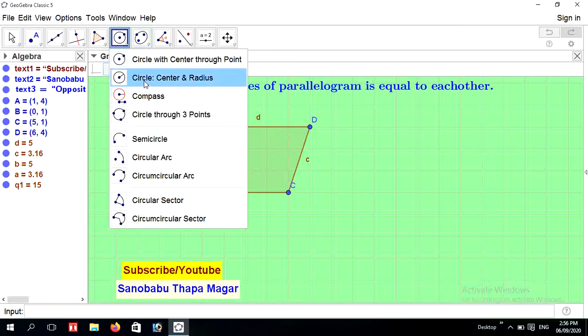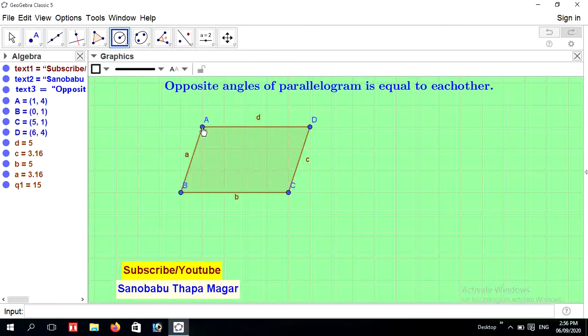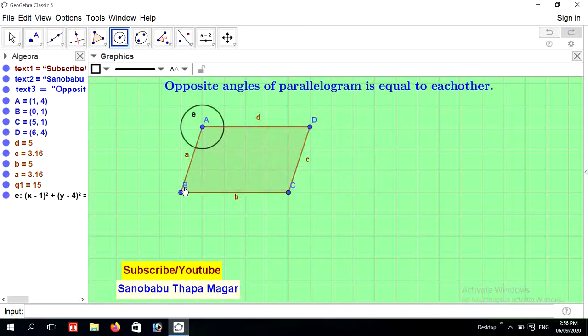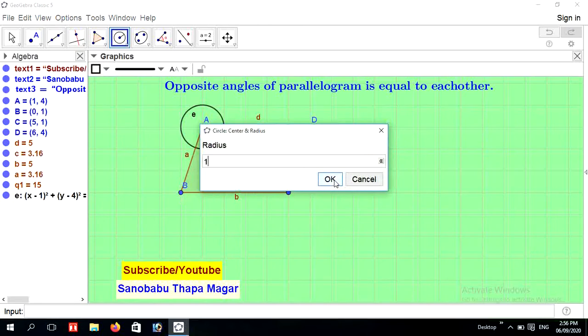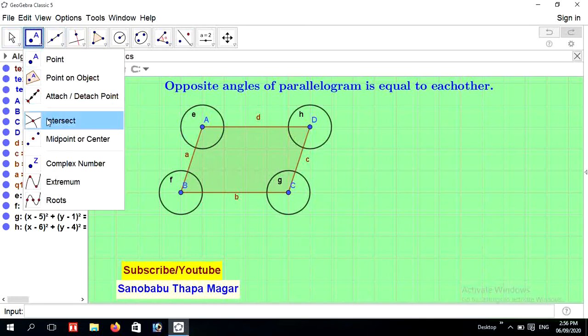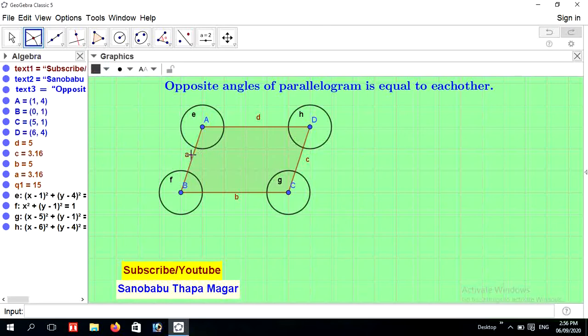Press circle center and radius and place at every vertex of parallelogram. We need to find the intersecting point of the sides and curve or circle. For that, go to point tool and place intersect option and find the intersecting point.